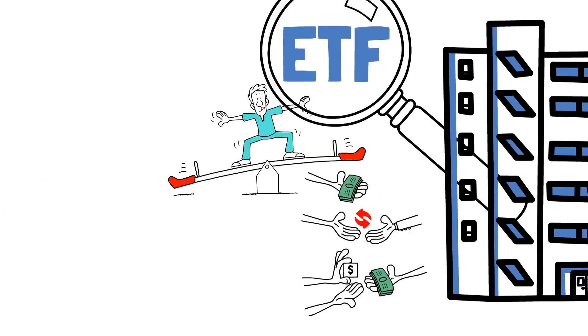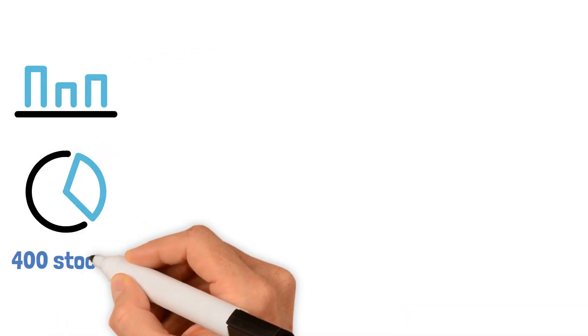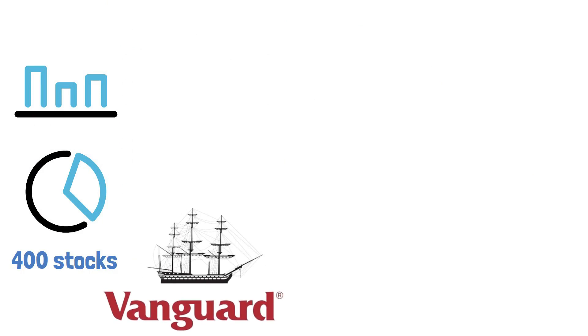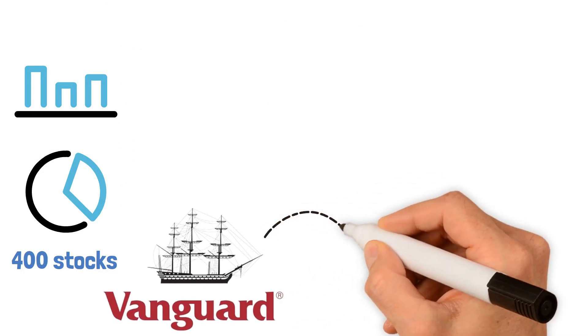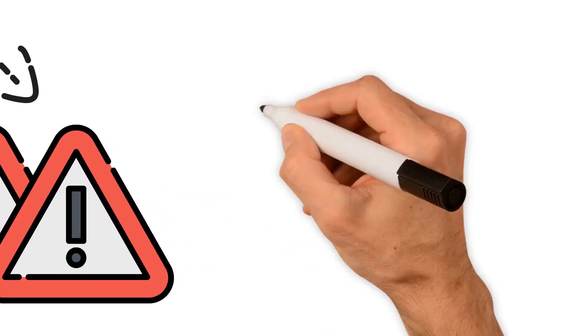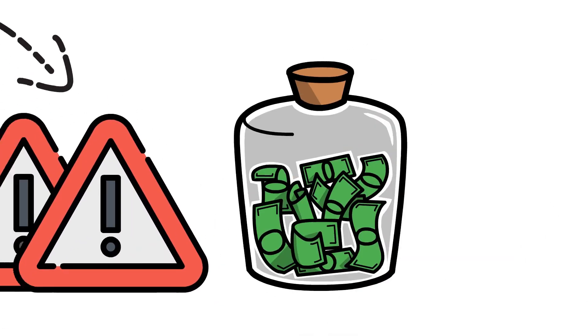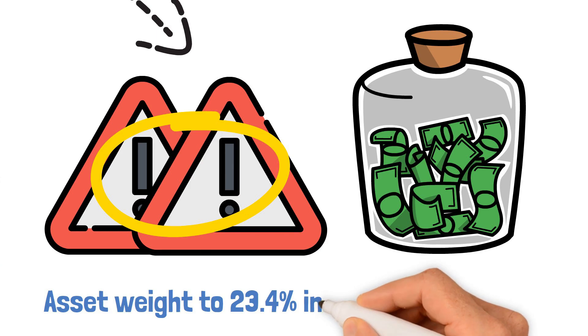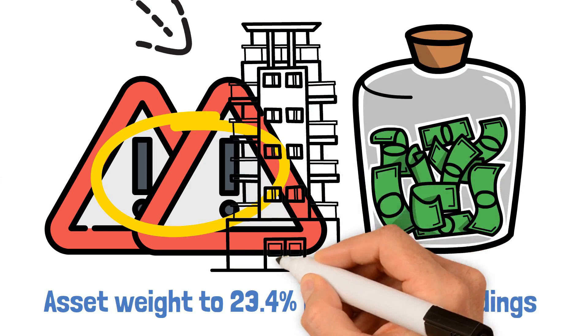With over 400 stocks included in this portfolio, the Vanguard High Dividend Yield ETF is well-diversified. This wide-ranging approach helps spread risks and exposes investors to a broad spectrum of high-dividend-yielding companies. To further manage the risk, the ETF limits its asset weight to 23.4% in its top 10 holdings, reducing over-reliance on any single company.